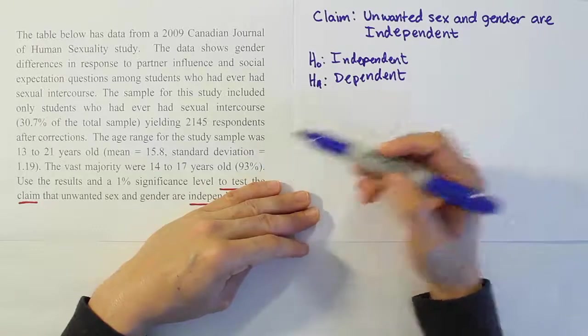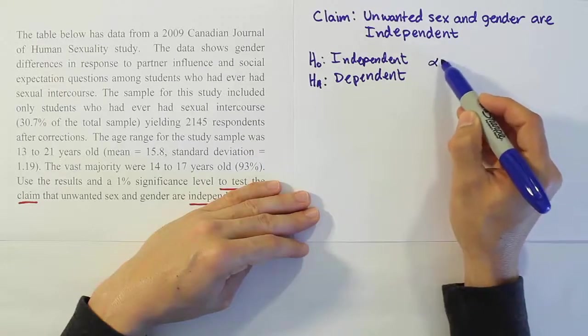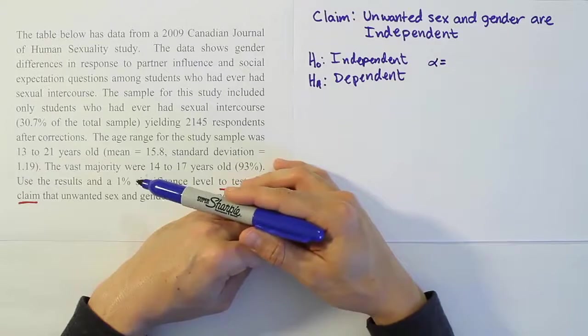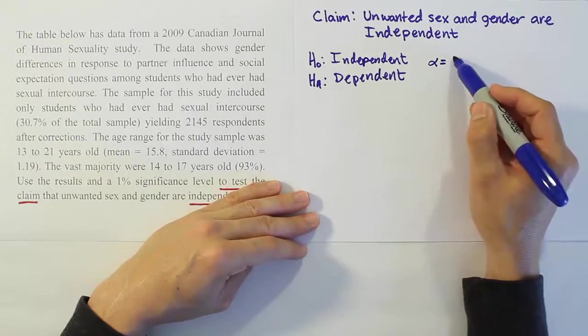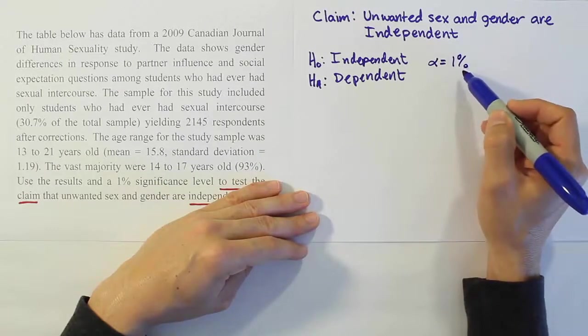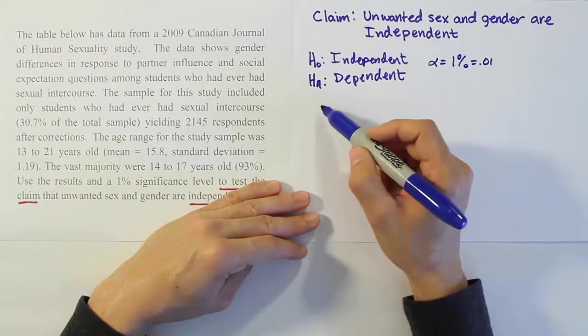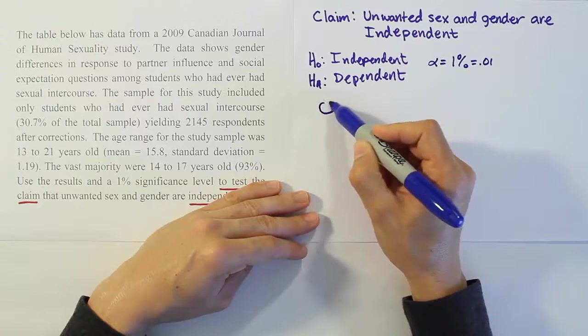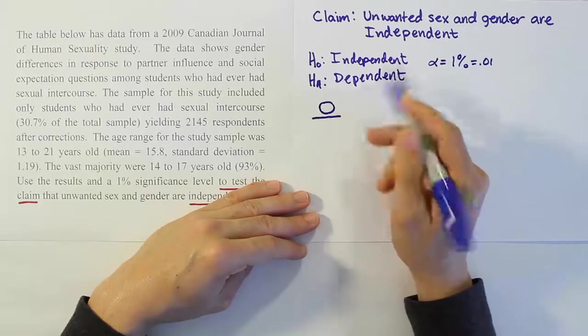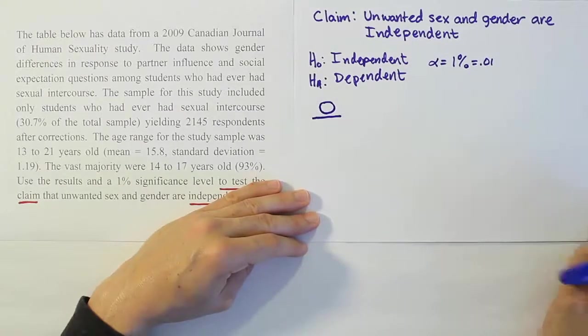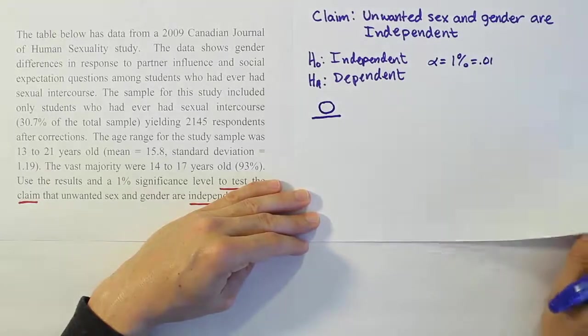Let's write down our alpha level here. Alpha in this problem is 1%, they said use a 1% significance level, so that's 0.01. Now from there let's manipulate the data itself. We're going to need an observed observation column. This is going to be all the observed cell counts that we had in the problem.